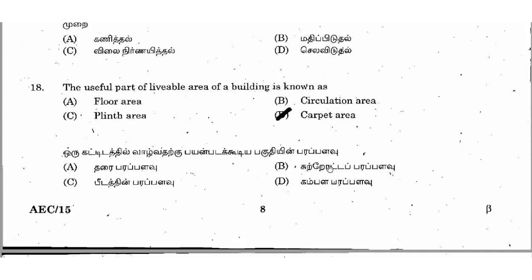Next question. The useful part or livable area of your building is known as what? The right answer is option D: Carpet area. The building's useful livable area is carpet area. Related terms include floor area, plinth area, circulation area, and carpet area.